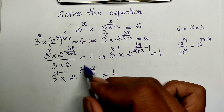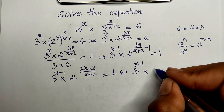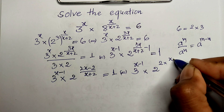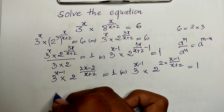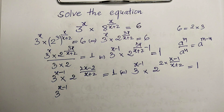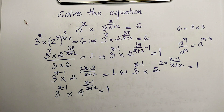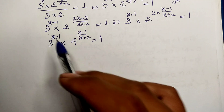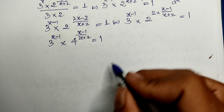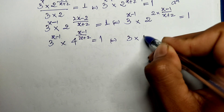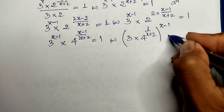Now I factor out a 2 from the exponent: we get 3 power h minus 1 multiplied by 2 to the power 2 times (h minus 1) divided by (h plus 2), equal 1. Since 2 squared equals 4, I can write 3 power h minus 1 multiplied by 4 to the power (h minus 1) divided by (h plus 2), equal 1. Now both factors share the exponent h minus 1, so I combine them: 3 multiplied by 4 to the power 1 over (h plus 2), all raised to the power h minus 1, equals 1.